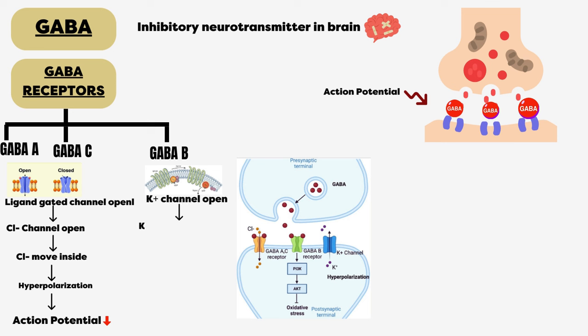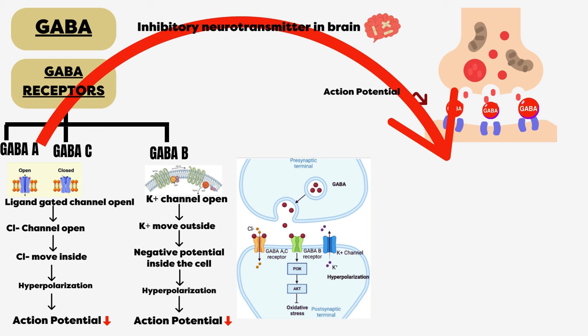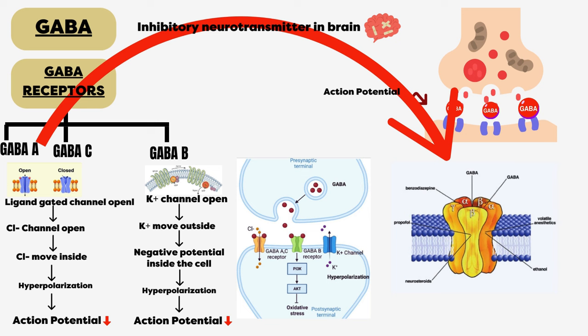GABA A is further divided into five subunits: two alpha, two beta, and one gamma subunit. Different drugs bind to specific subunits performing specific functions.